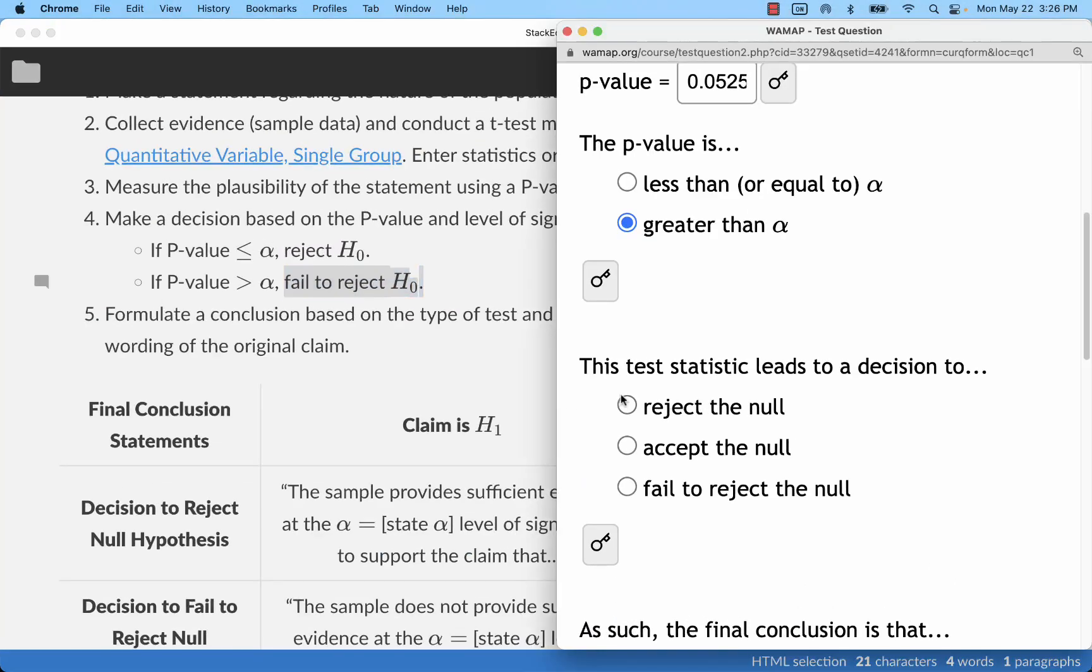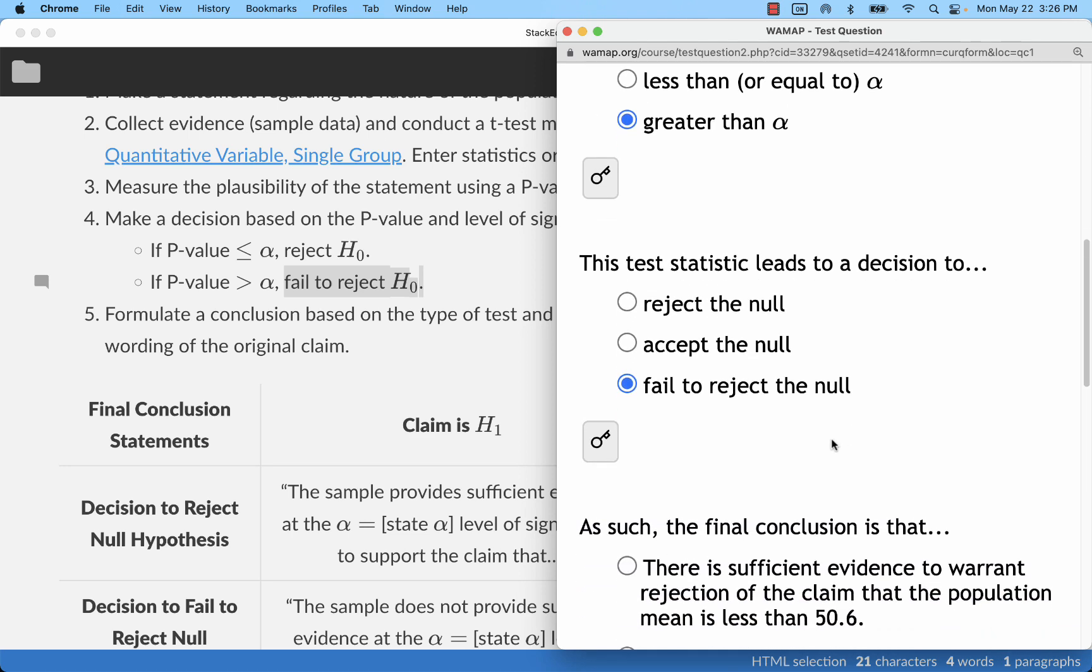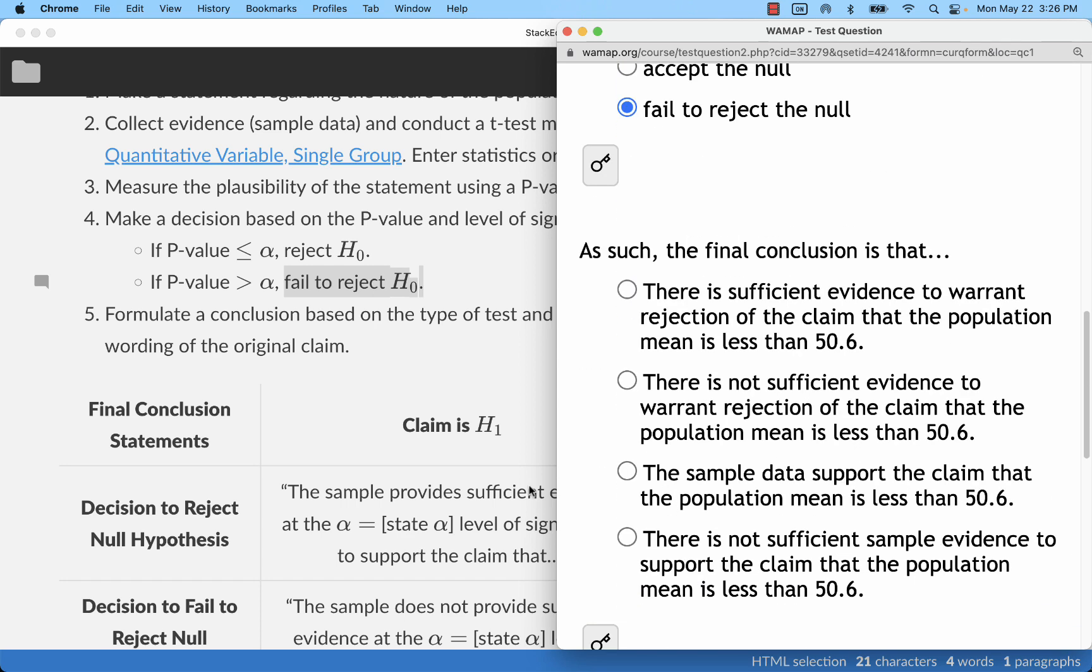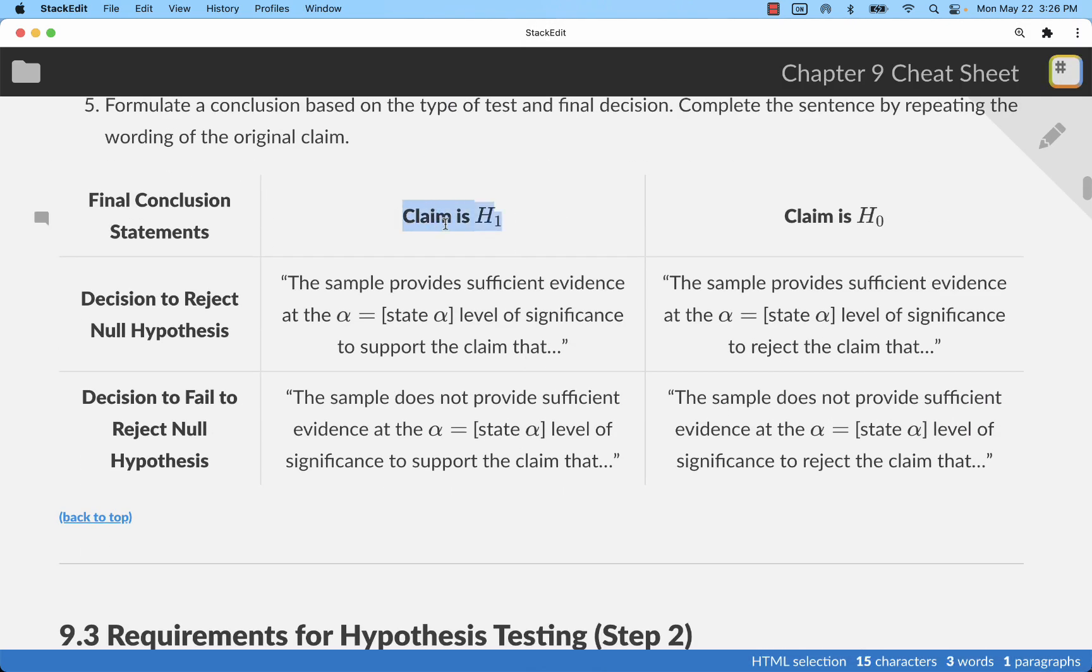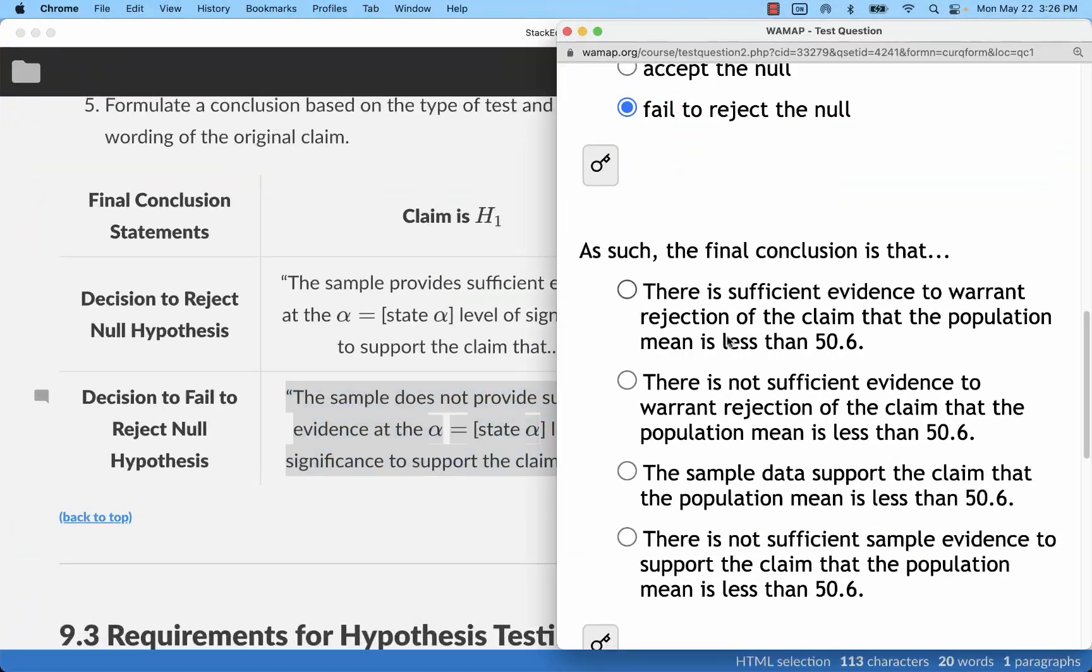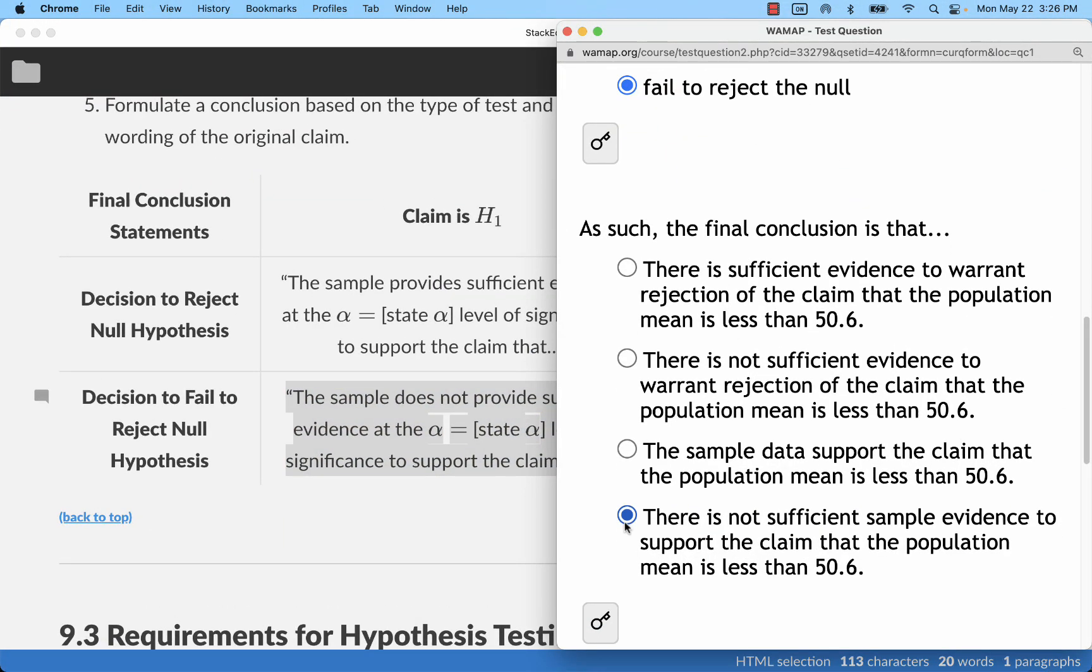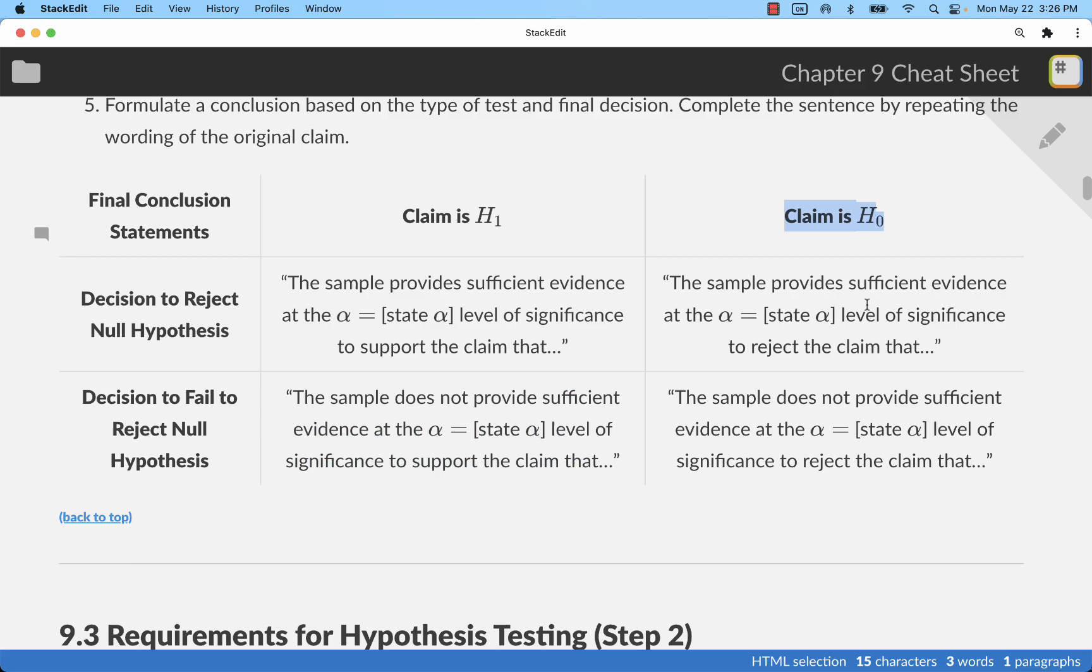And now, this will also change the final conclusion. The claim is still HA or H1, but now the decision was failure to reject, so we do not have enough evidence to support that claim. Here is that final answer. There is not sufficient evidence to support the claim. So you're looking for two pieces, whether there is or isn't sufficient evidence. You see is versus is not. And then support or sometimes we'll say rejection, which we would only say rejection if the claim was the H0.